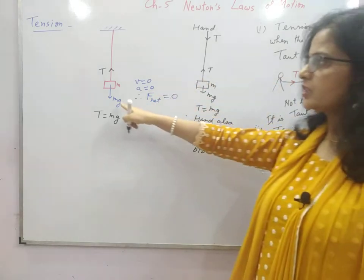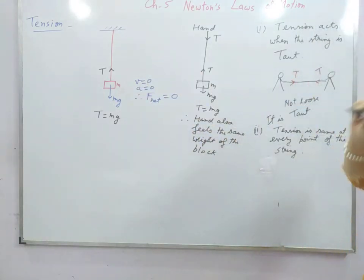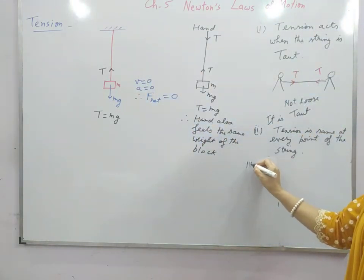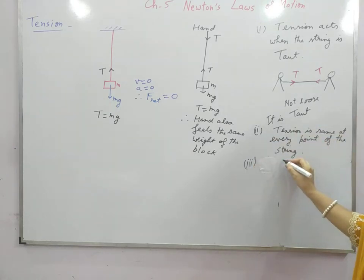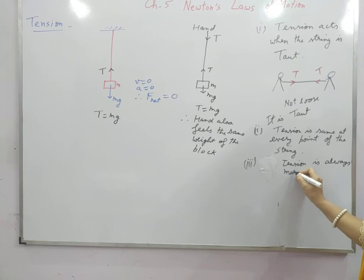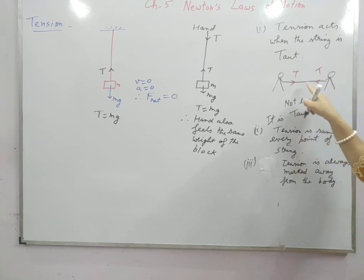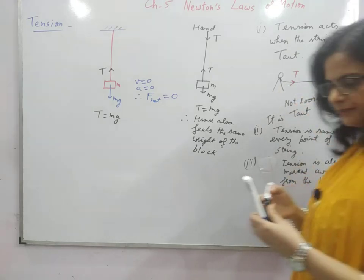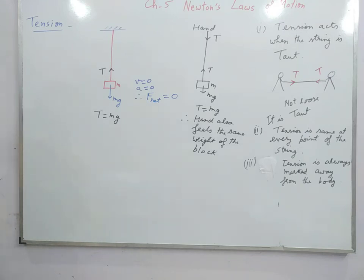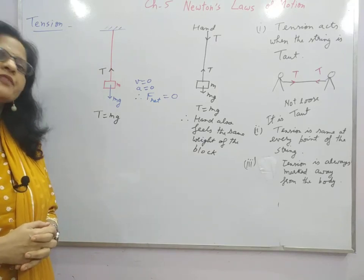Tension occurs to counterbalance the opposing force, as you have seen in this case. The third important point for numericals is that tension is always marked away from the body, because the string is pulling. So for this body the tension is marked away, and for that body the tension is marked away. This is all about tension and normal reaction force. Hope you have understood the concepts. We will be using these in the numericals which we will discuss after discussing the free body diagrams.